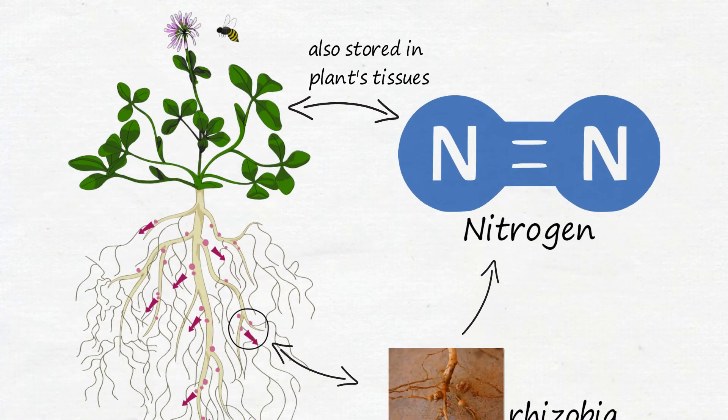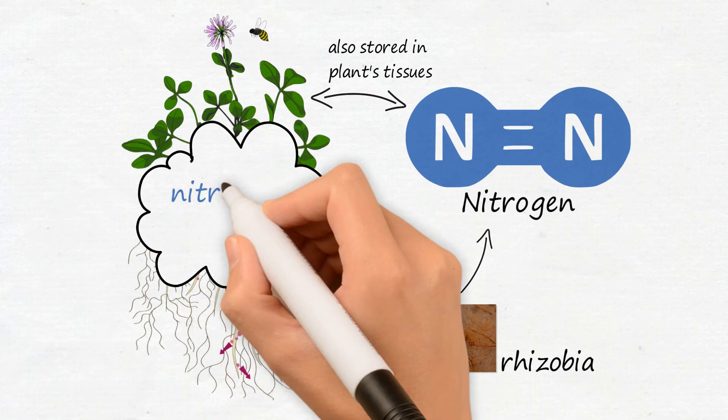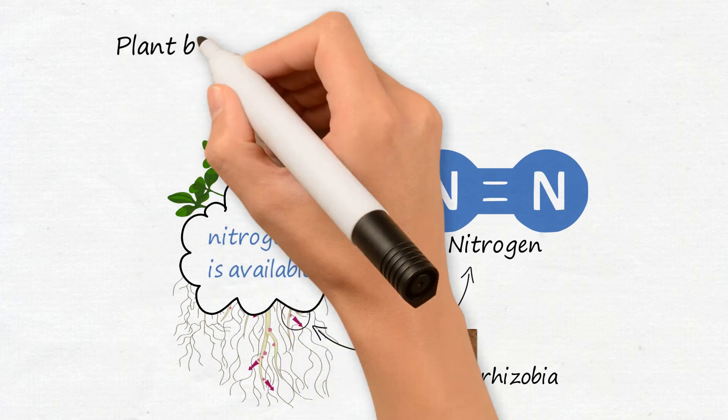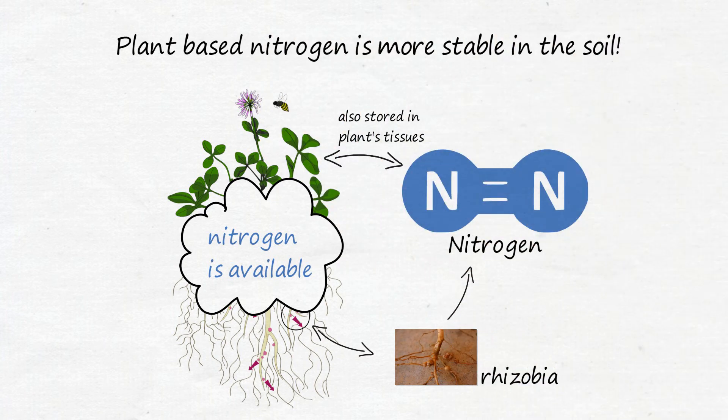Once the cover crop is terminated, the microbes in the soil break down the plant material and make this nitrogen available to the following crop. Plant-based nitrogen is more stable in the soil than commercial nitrogen.